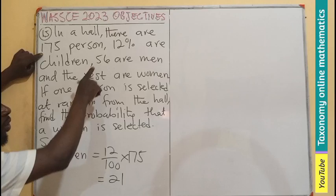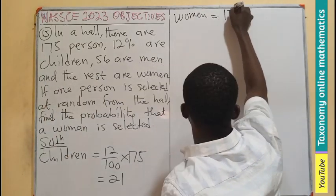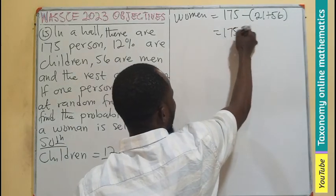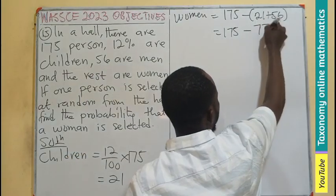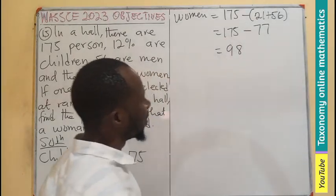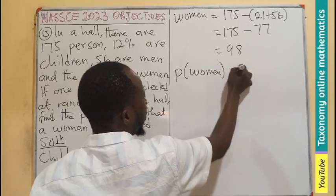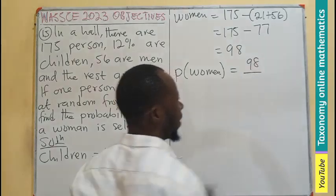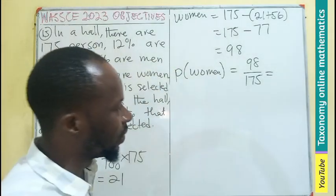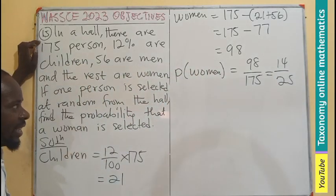Meaning the women is going to be total number of people minus the children plus the men. So this would be 175 minus 77, which gives us 98. So probability of women is number of women in the hall, 98, divided by total number of people, 175. Our common factors could go in there to give us 14 out of 25. So the probability we are looking for, for women in that hall, will be 14/25.